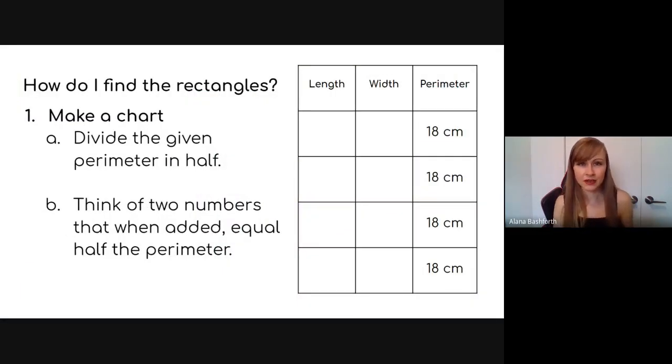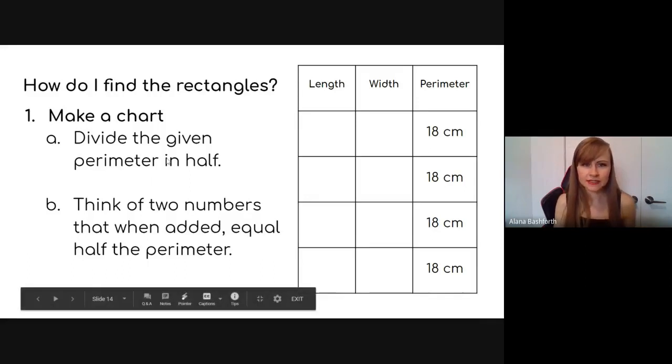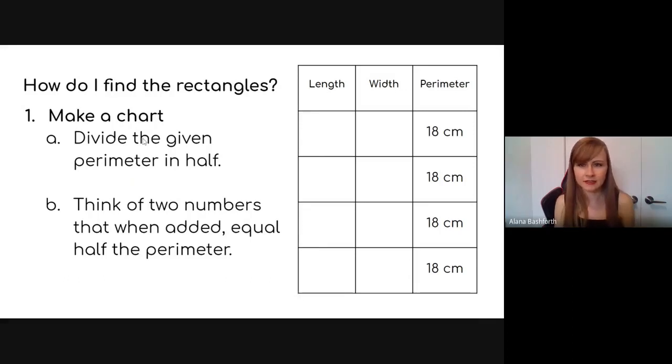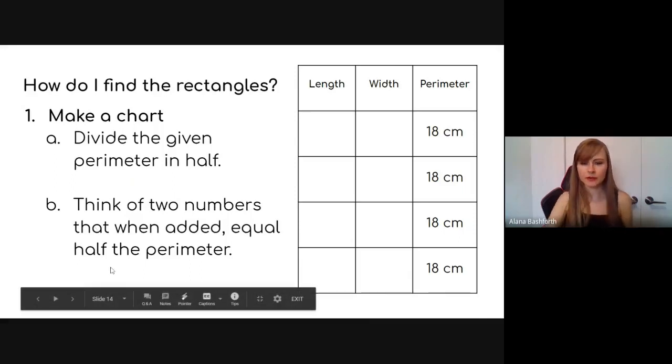And so how do I find the rectangles? So this is what you're going to do. First, you're going to want to make a chart. You're going to make a chart and divide the given perimeter in half. So in our case, it was 18. So it's going to be nine. And then think of two numbers that when added equal half the perimeter. So what does that look like? So 18 divided by two equals nine. So half of 18 is nine.